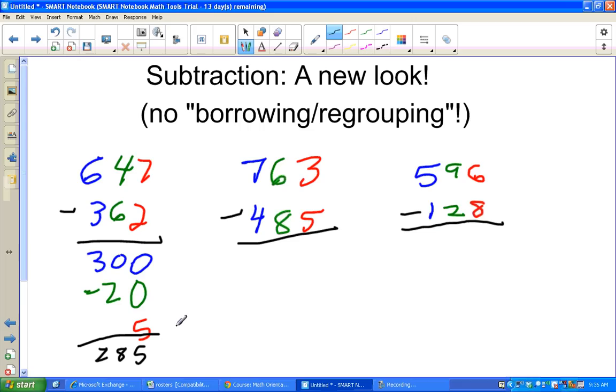Let's try it again. If you don't believe me, you can check that with a calculator, you can do your borrowing, regrouping method, whatever you want to. Trust me, 285 is correct.